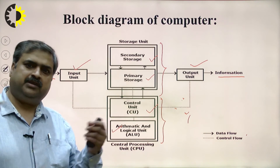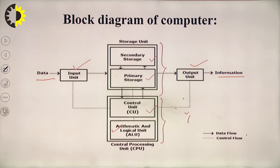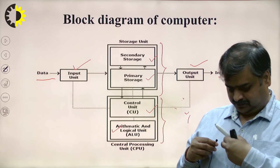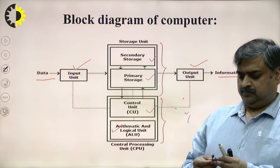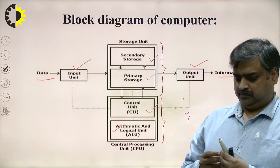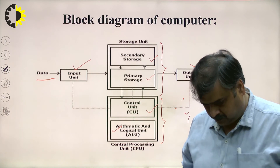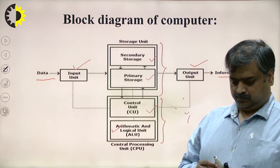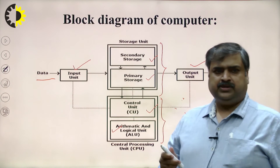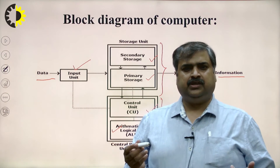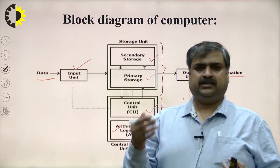The processing part has two things: the control unit and the ALU — Arithmetic Logic Unit. These units perform processing, and the processor can only directly access primary memory, which is why it is called primary memory. Primary memory is accessed by the processor directly. Secondary memory, when needed, has its data copied into primary memory and then accessed by the processor.